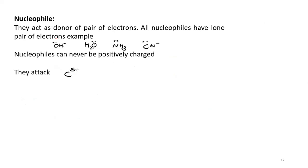Moving on, talking about types of reagents. There are three types of reagents: nucleophile, which is a donor; electrophile, which is an acceptor; and a free radical. A nucleophile acts as a donor of a pair of electrons. All nucleophiles have a lone pair of electrons — for example, H₂O and H₃CN. These lone pairs are what define them.